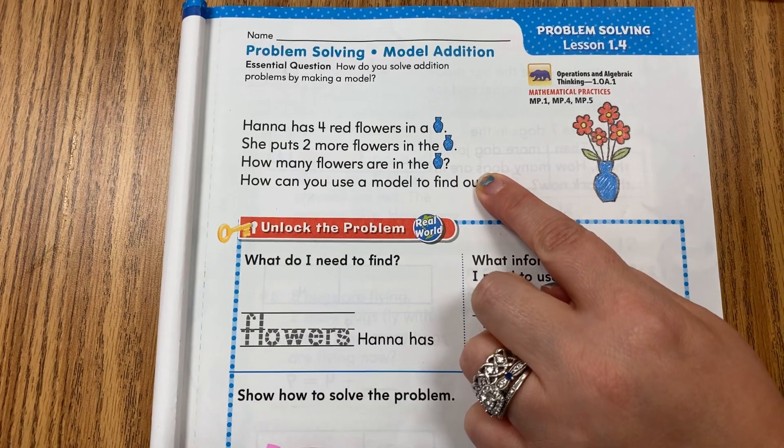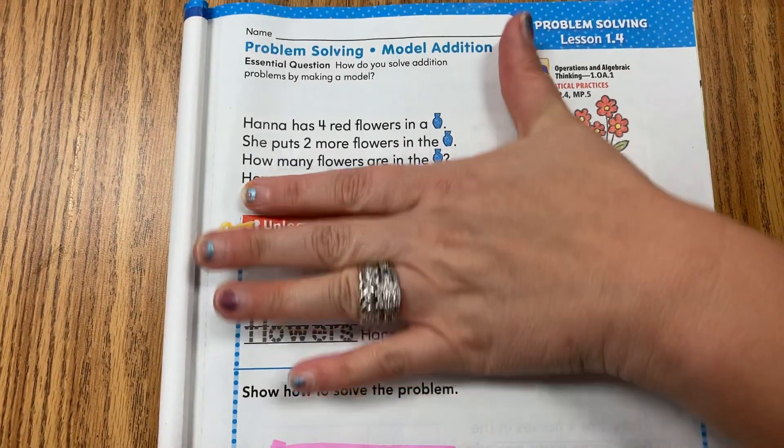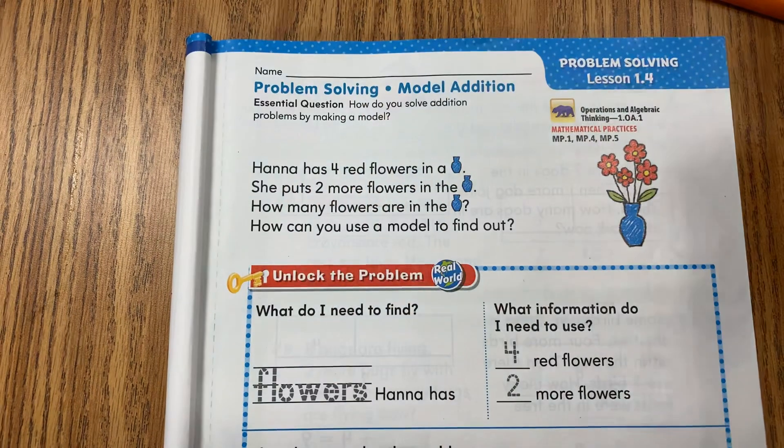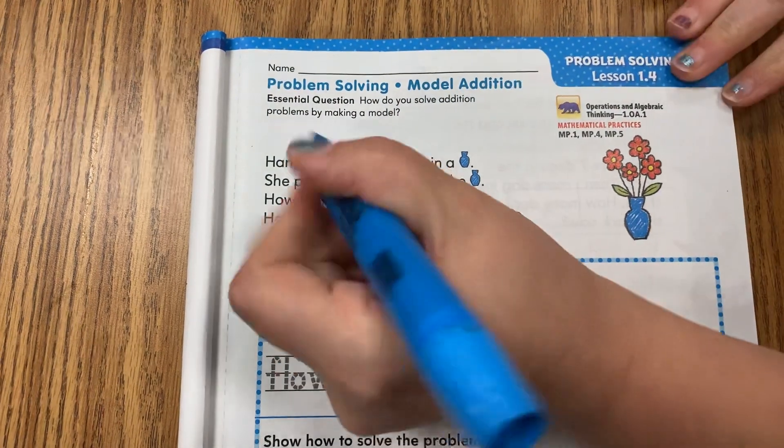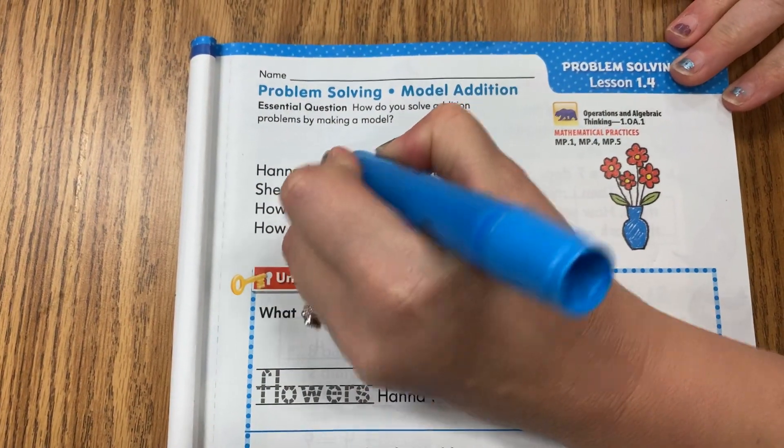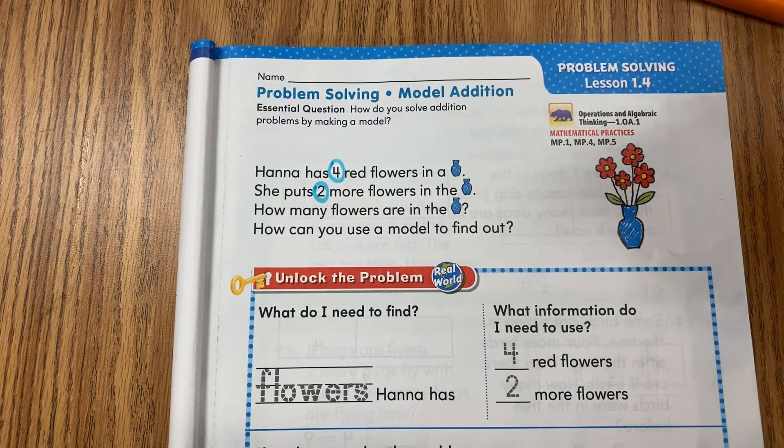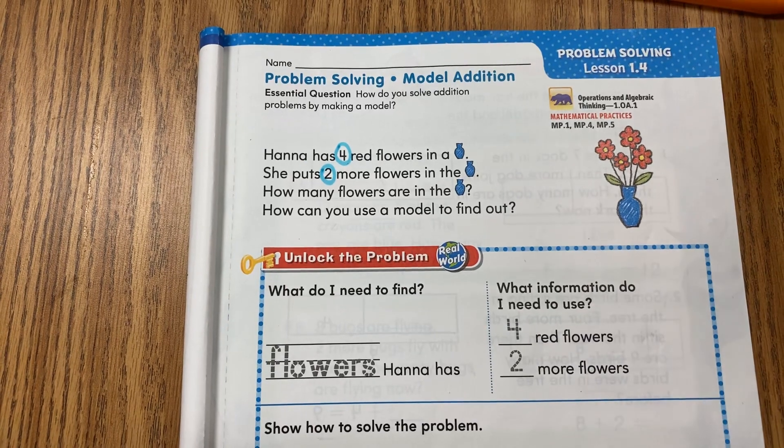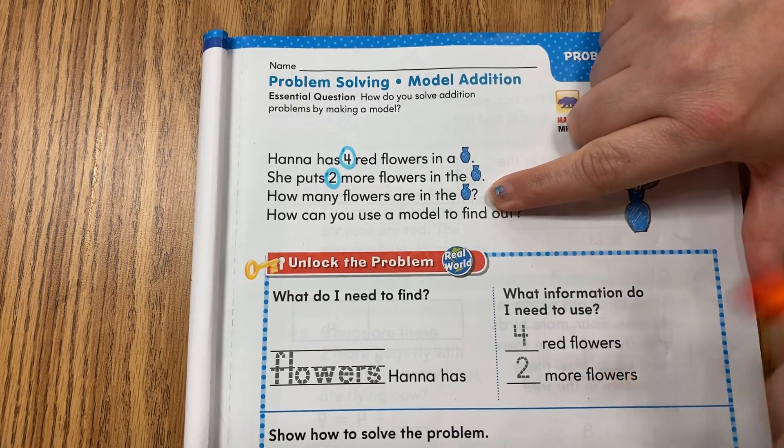Really, this bottom part is not part of the question; they're just telling us they want us to use a model. So we're really going to look at these first three sentences to solve the problem. Using my cube, I'm going to circle my numbers: four and two.